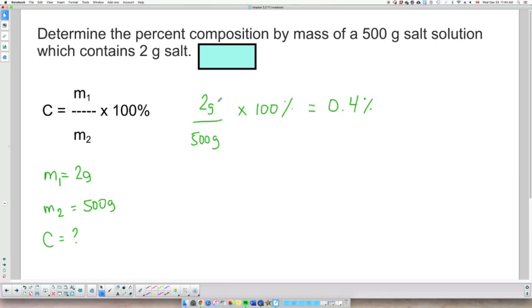Now, if I do significant figures, this number here is the smallest one with one digit. So my answer should have only one digit. It's already the case, we're good. So that's case number one, mass over mass.